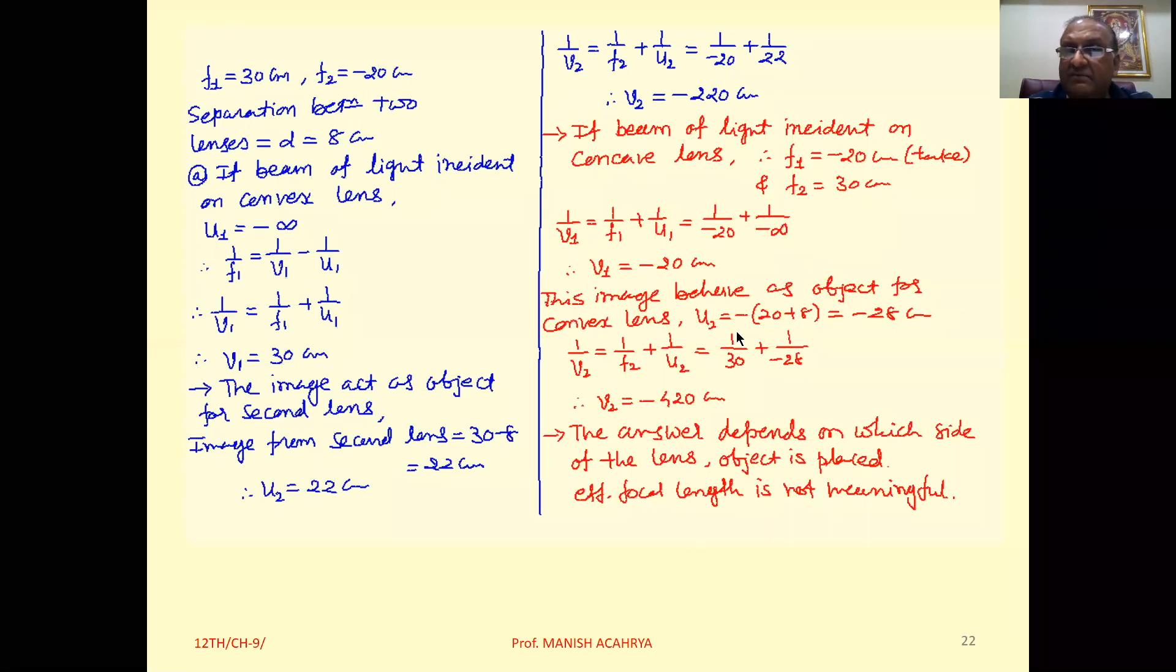This image behaves as an object for the convex lens, so U2 equals 20 plus 8 equals 28, and U2 is negative. Now 1 upon V2 equals 1 upon F2 plus 1 upon U2. F2 is 30, U2 is minus 28, so V2 is minus 420 centimeter.